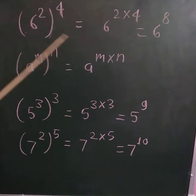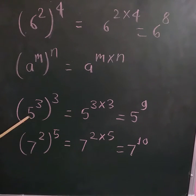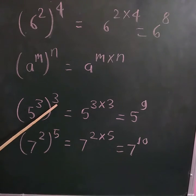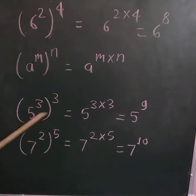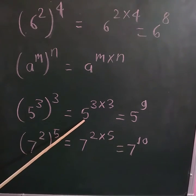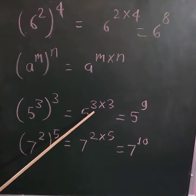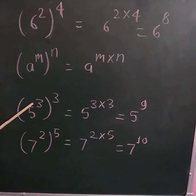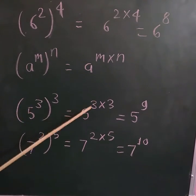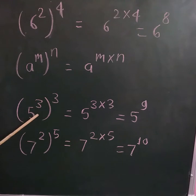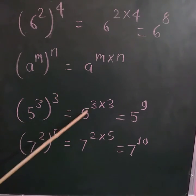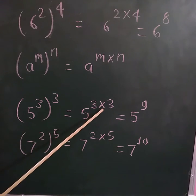In this way you can solve this type of examples. Let us see another example: 5 raised to the power 3, whole raised to the power 3. So how to apply this formula? This is 5, so we write 5 raised to the power 3, where m is 3 and n is 3. So 5 raised to the power 3, whole raised to the power 3, equals 5 raised to the power 3 multiplied by 3.